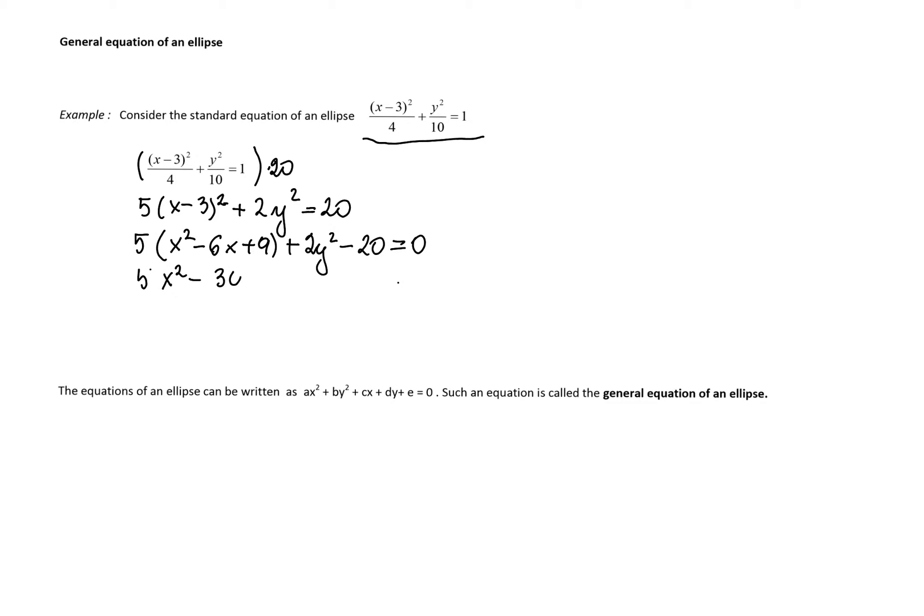To remove the parentheses, we need to square the binomial. So we'll have x² - 6x + 9. We apply the formula for square of binomial plus 2y² minus 20.